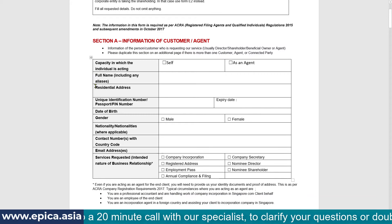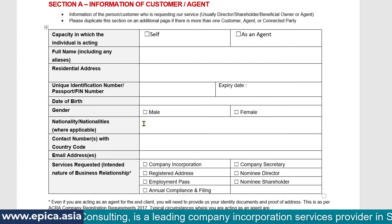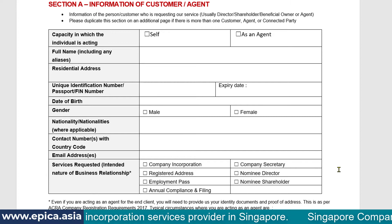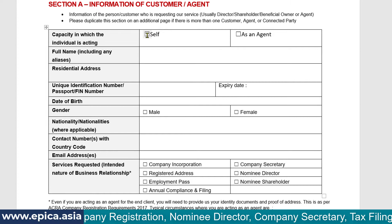Let's have a look at Section A. Scrolling down, this is Section A — information of the customer or the agent. The details here are to be filled by the person who is filling this form and primarily interacting with us. In most cases, you are the person incorporating the company and you will be either director or shareholder. In that case, you take it as 'self' and fill your own details.